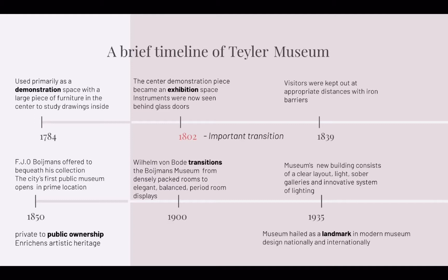In 1839, museum staff realized they needed to protect the art objects, and visitors were kept at appropriate distances with iron barriers. Then in 1850, an important shift occurred: while in the early 19th century the art society in the Netherlands was still privately owned by people of high status, a renowned lawyer named Boijmans offered to bequeath his collection, creating the city's first public museum. Opened on a principal shopping street in Rotterdam, this changed art ownership from private to public and enriched Rotterdam's artistic heritage.